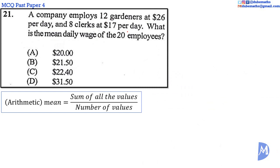Therefore, the total daily wage is equal to 26 multiplied by 12 added to 8 multiplied by 17.